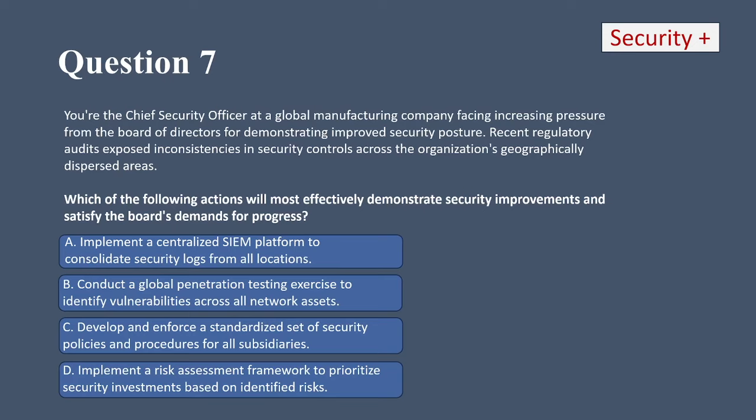The way I picture this question is: what do you do after that board meeting? You're not going to implement a SIEM — security information and event management. A global penetration test would take much longer to implement and would not satisfy the board's demands. D wouldn't satisfy the board either. The only one that makes sense here is C. While all options contribute to improved security, developing and enforcing standardized security policies offers the most effective pathway for showcasing tangible progress, addressing the board's concerns, and laying a strong foundation for future security initiatives across a globally dispersed organization.